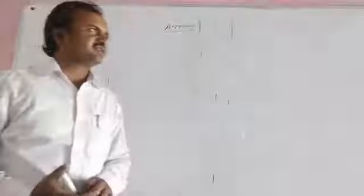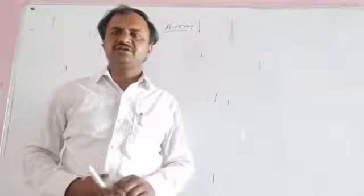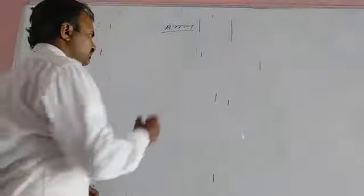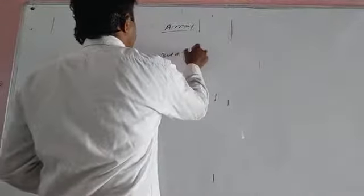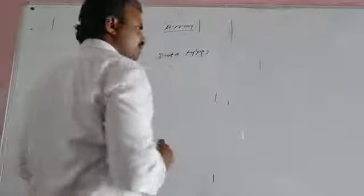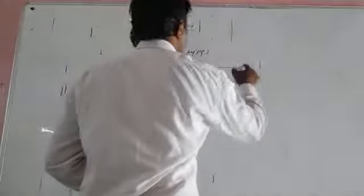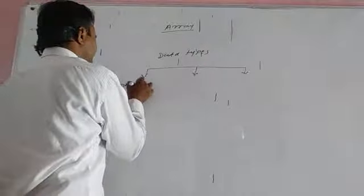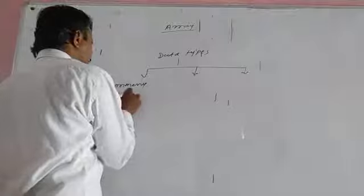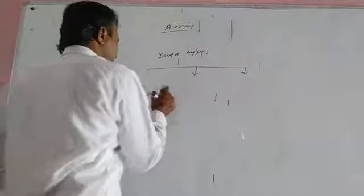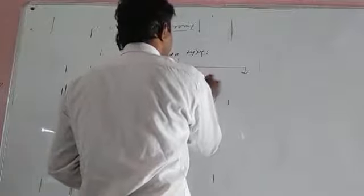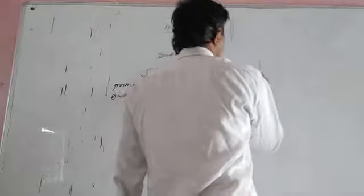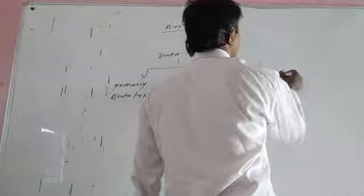Before we discuss the array, let us review data types. In C language, there are varieties of data types used to store values. There are three different types: first, primary or fundamental data types; second, derivative data types; and third, user-defined data types.